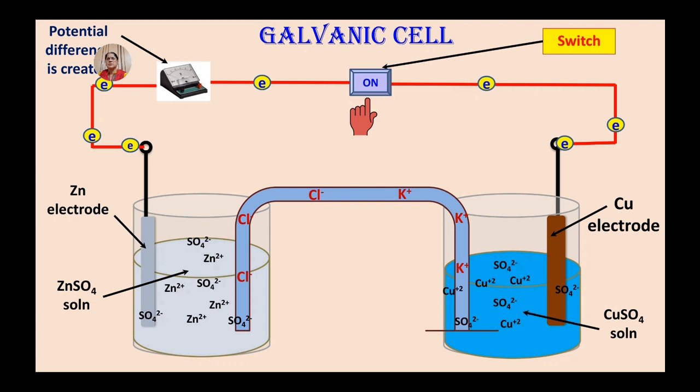These two electrons from external circuit move from anode to cathode through ammeter. The flow of these electrons constitutes electric current.